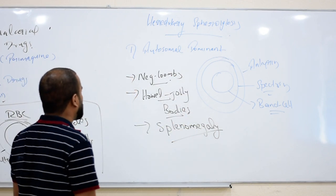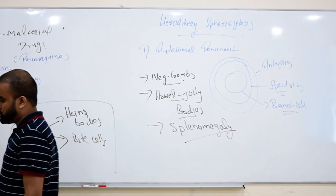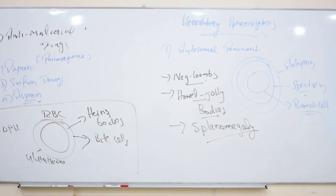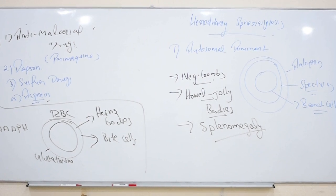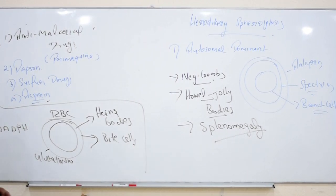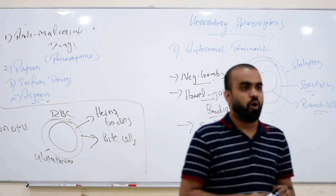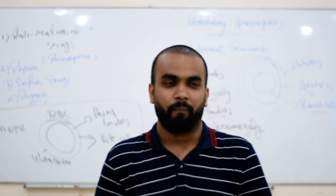Remember that is very important - autosomal dominant hereditary spherocytosis. There are a lot of questions they used to ask here. So that's all about all the normocytic anemia we have reviewed for all the exams. Thank you.